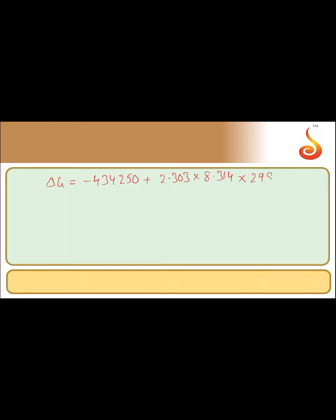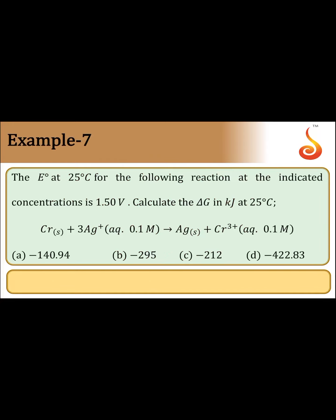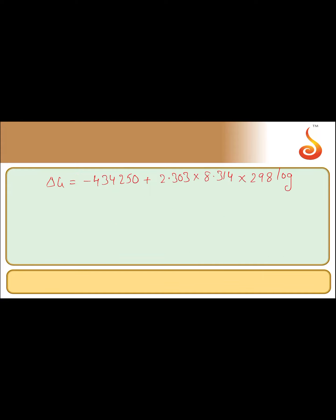Q is product concentration by reactant concentration. Here Ag solid and Cr solid concentrations are 1 molar. Remaining is Cr plus 3 concentration by Ag plus concentration. 3 moles of Ag plus, so it is power 3.